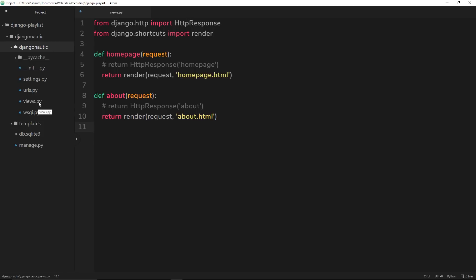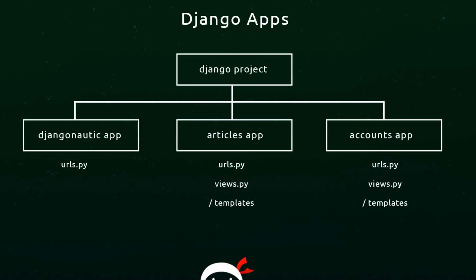So to better explain what apps are in Django, I created this diagram which shows the kind of structure or desired structure of our Django project. When we created a Django project, it created the root folder — django-nautic — and then inside that it also created another django-nautic folder which is our first, main app for the project. Inside here we manipulated the URLs, created urls in here, and also created a views file controlling what we sent back to the user. Generally when we're creating a Django project, what we do is split up our application into separate mini apps, where each app controls a certain aspect or section of the whole web application.